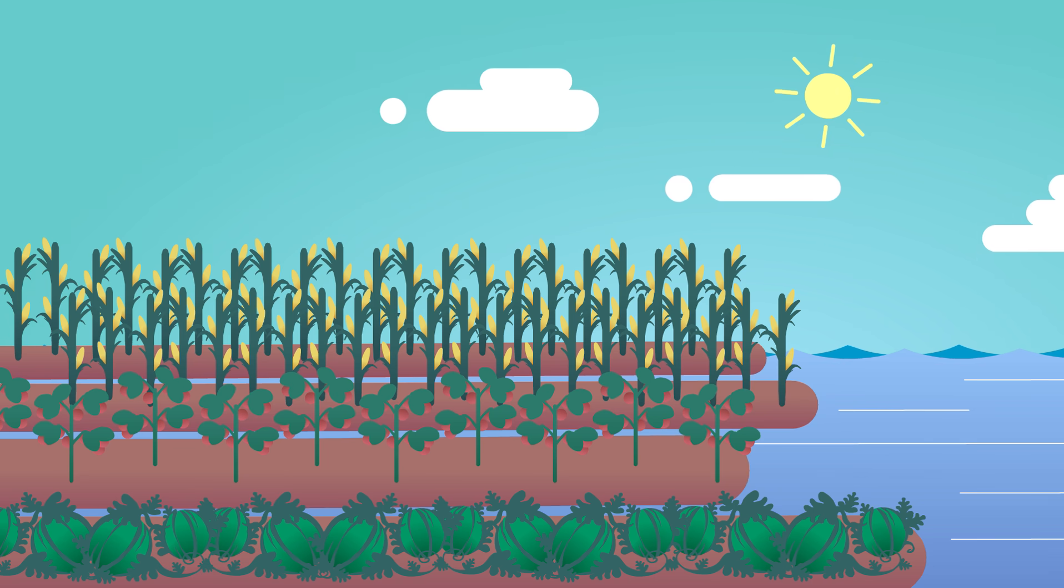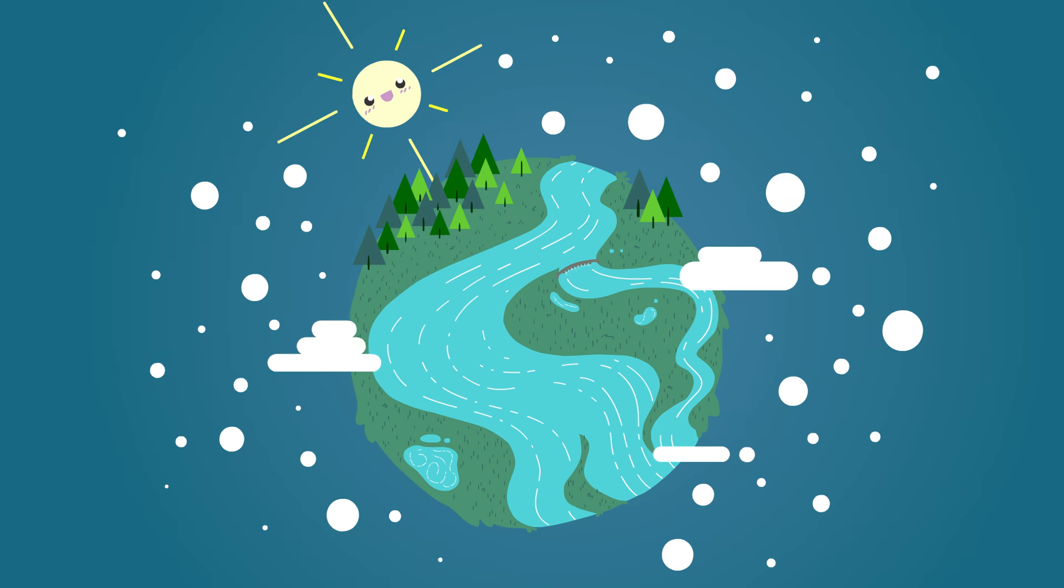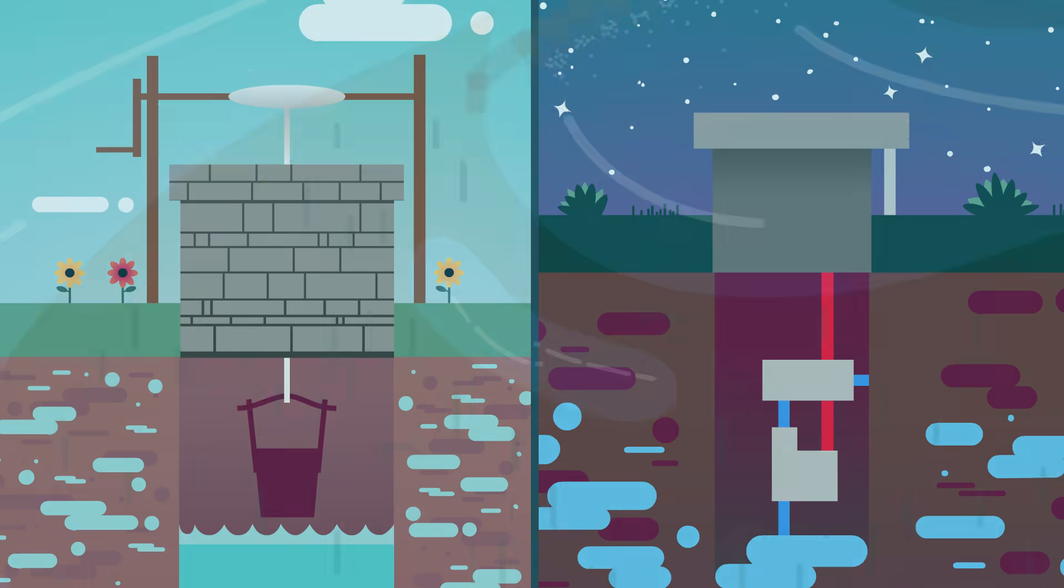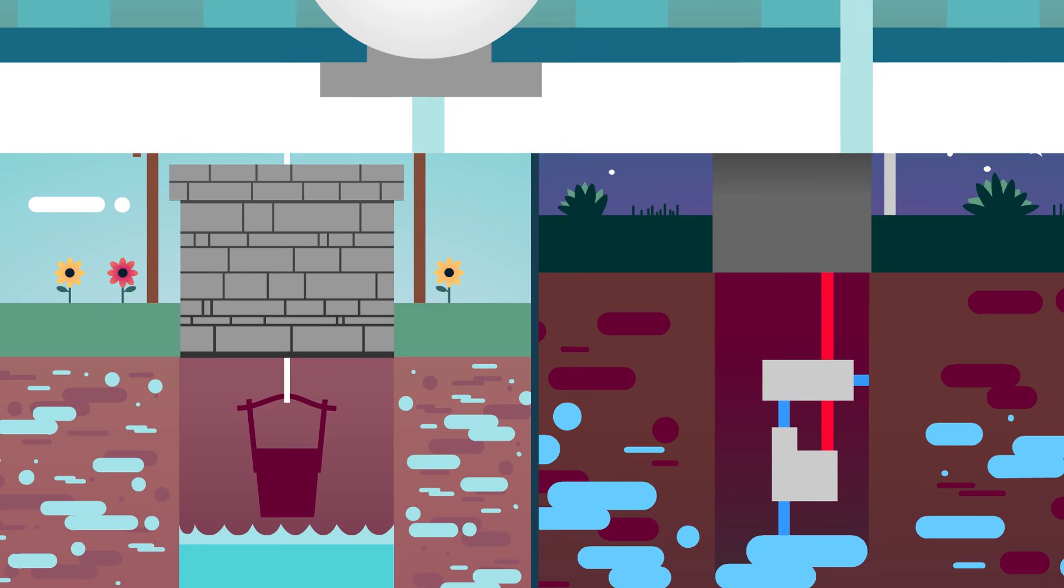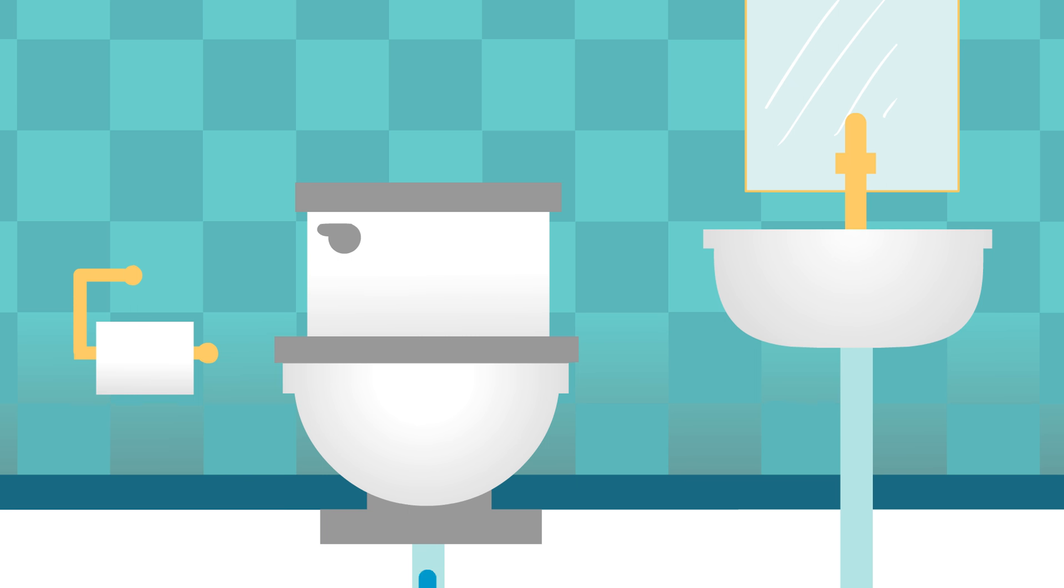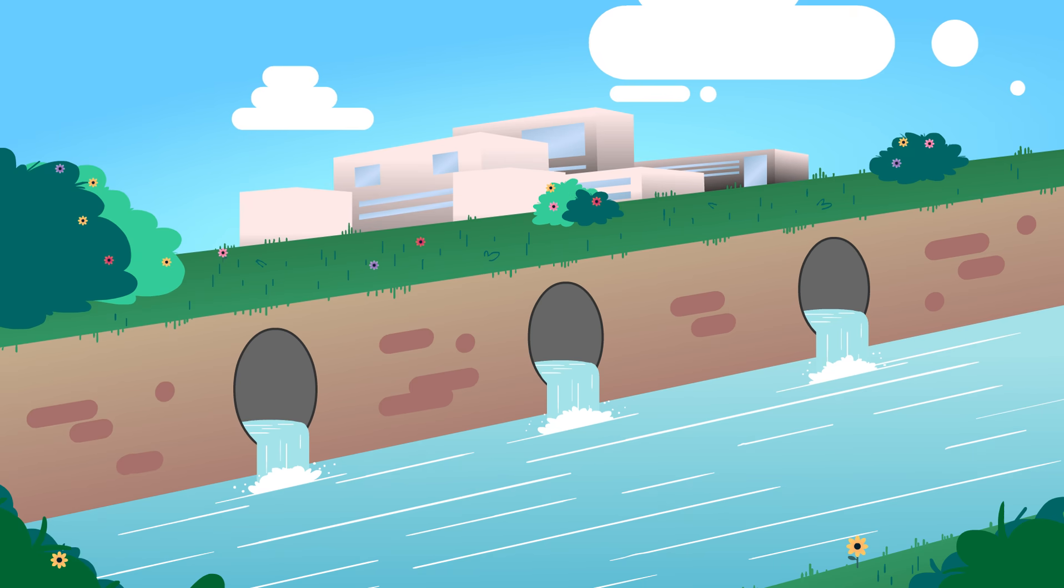Today, irrigation takes many forms. Humans divert water from rivers, lakes, or ponds and pump it from below the ground. Sometimes irrigation water is recycled water that has been purified from wastewater treatment plants.